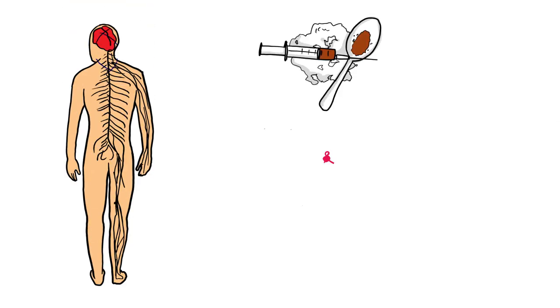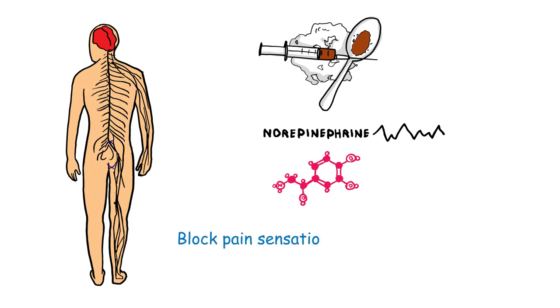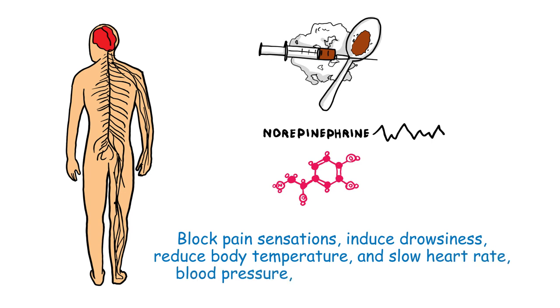Opioid drugs also disrupt the natural production of norepinephrine and act as central nervous system depressants. Opioids block pain sensations, induce drowsiness, reduce body temperature, and slow heart rate, blood pressure, and respiration functions.